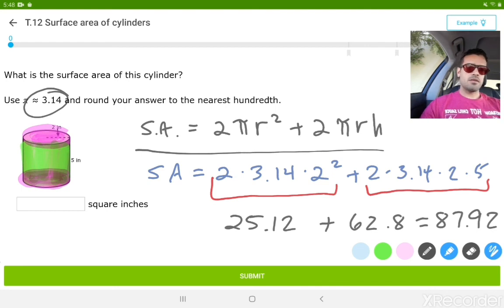And again, when we add those two sums together, we get our answer, which is 87.92. And there you have it, surface area of cylinders.